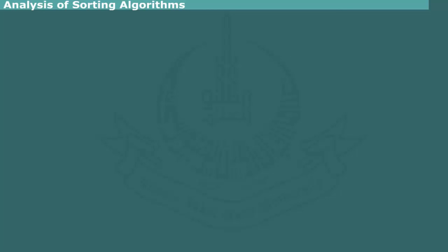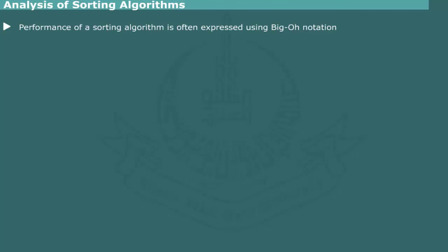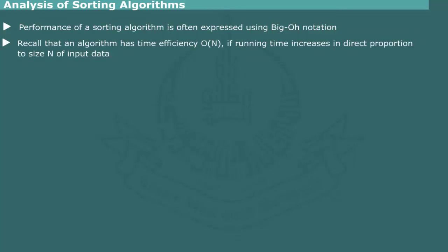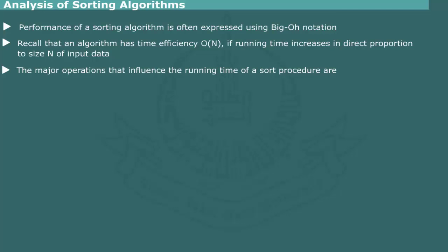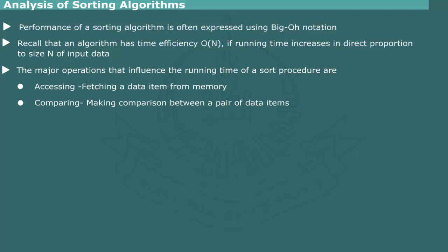Analysis of Sorting Algorithms: The performance or running time of an algorithm is expressed using Big-O notation. For example, an algorithm has O(N) efficiency if the running time increases in direct proportion to the size N of input data. In general, sorting involves the following operations: accessing — fetching a data item from memory; comparing — making comparisons between a pair of data items; swapping — interchanging a pair of data items; and assigning — storing a data item in a variable. The comparing and swapping are the most time-consuming operations and normally considered in analysis.